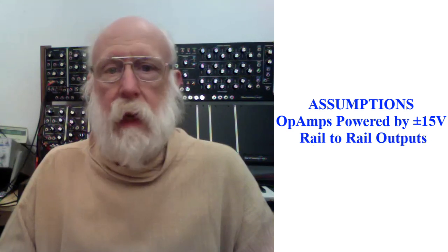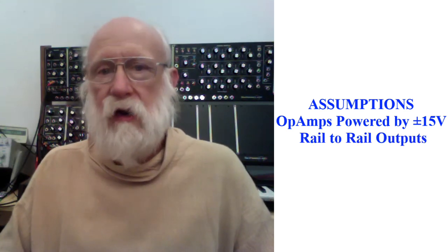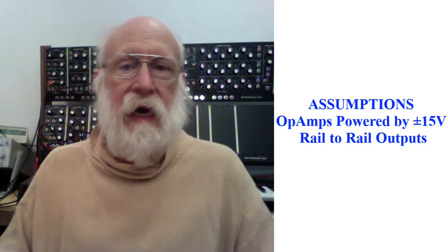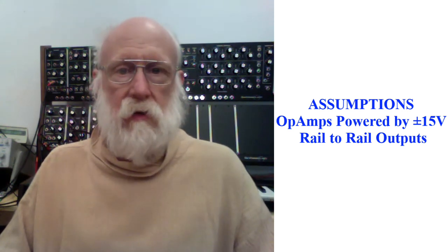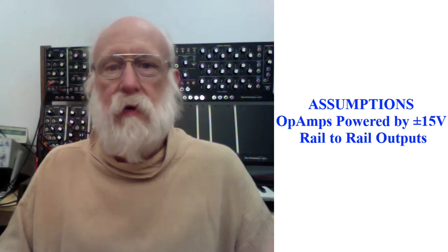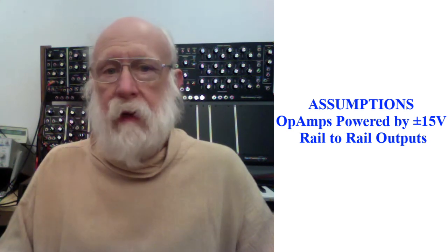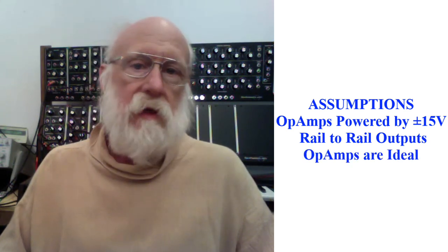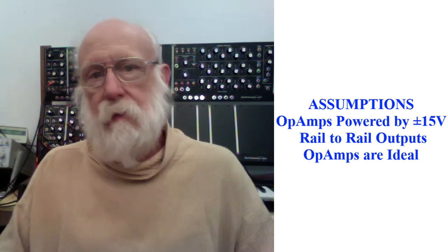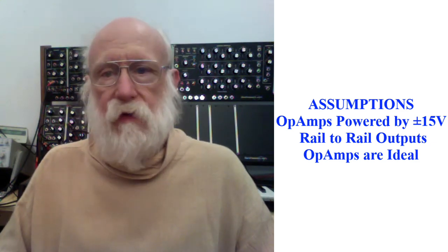We're also going to assume that they have rail-to-rail outputs. Just to simplify the discussion, it's absolutely not necessary to make these circuits work, it's just a little bit easier to talk about. We're also going to assume that the op amps are ideal. In other words, the gain is infinite and the input bias current is zero.